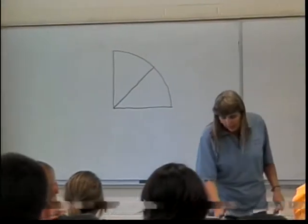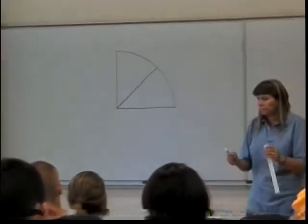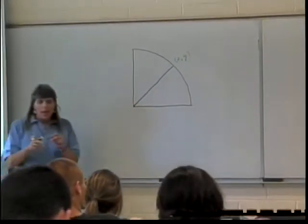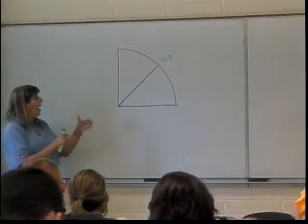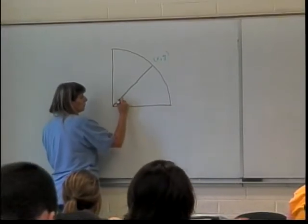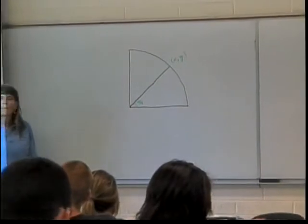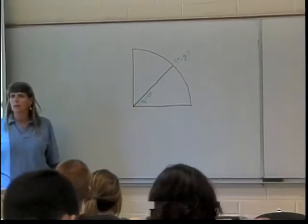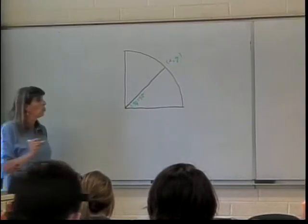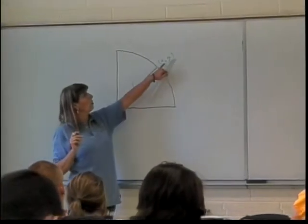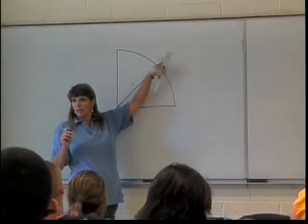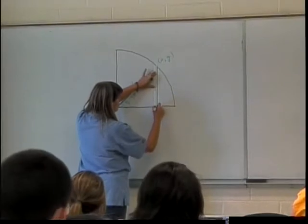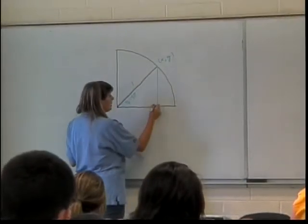We are going to look at how to figure out what the X and Y coordinates of this point are using geometry. This is my angle of pi over four, which is 45 degrees. The black line is a radius of this circle, so how long is it? One. I'm interested in finding X and Y, so I take my point on the circle and drop a perpendicular line down to the X axis to make a right triangle.